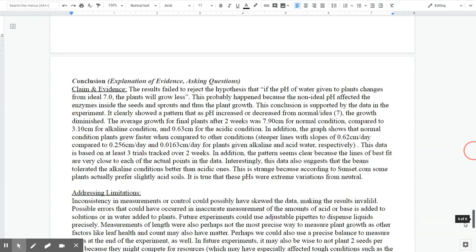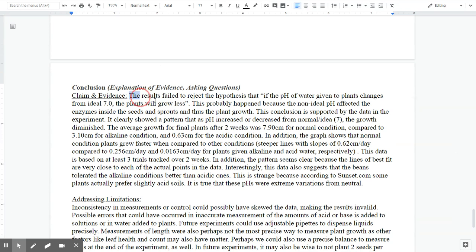And that is manifested both in the rate of growth and in the total growth at the end as well. So when you look at my conclusion section, I say the results failed to reject the hypothesis that if the pH of water given to plants changes from the ideal 7, the plants will grow less. Certainly, I can defend that with the data. So that's why I can say it failed to reject. And the second part is I restate my hypothesis.